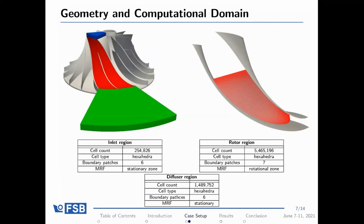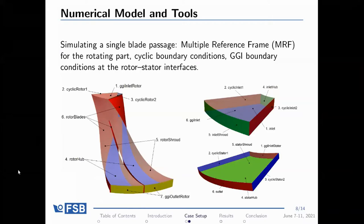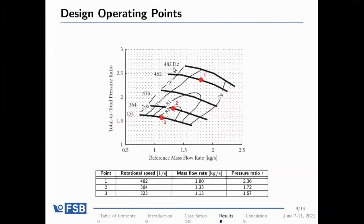We chose the frozen rotor approach with the AME zone for the rotating zone. The inlet is placed on top and the diffuser at the bottom. Since it's only a part of the rotational geometry, we used cyclic boundary conditions on the long blades and GGI boundary conditions on the interfaces between the stationary and rotating zones, also useful for assigning rothalpy jump boundary conditions.